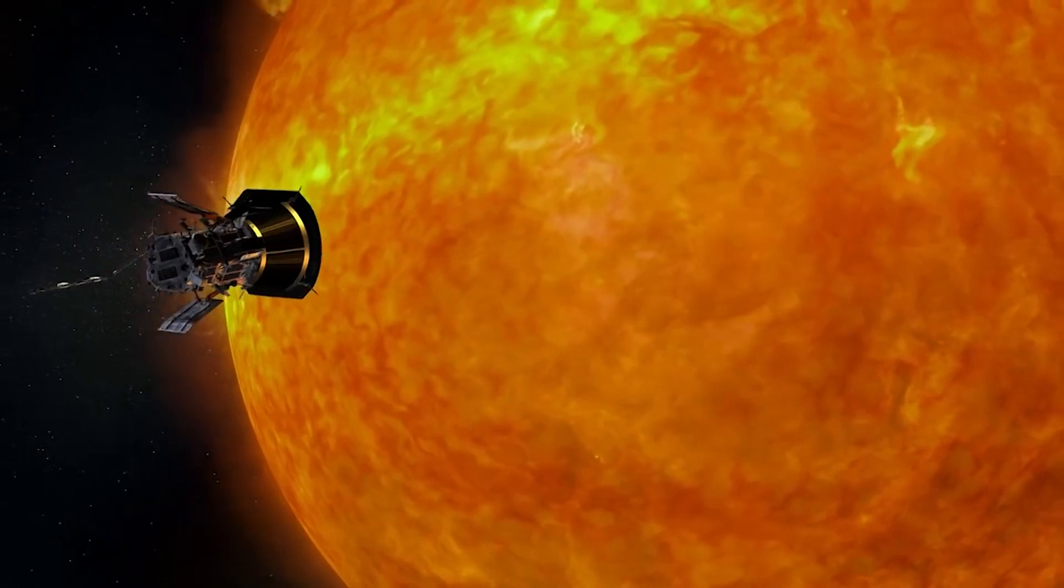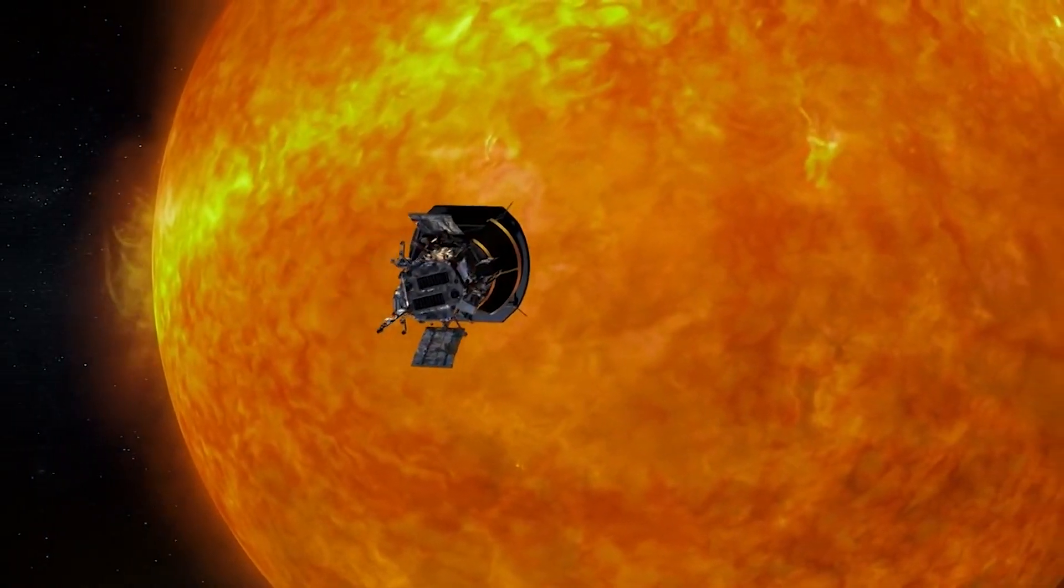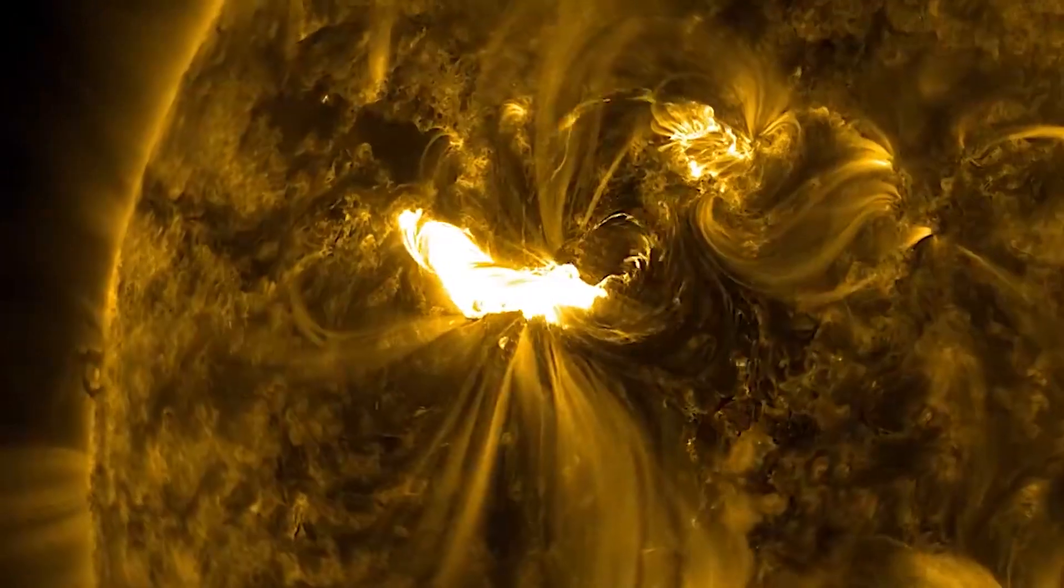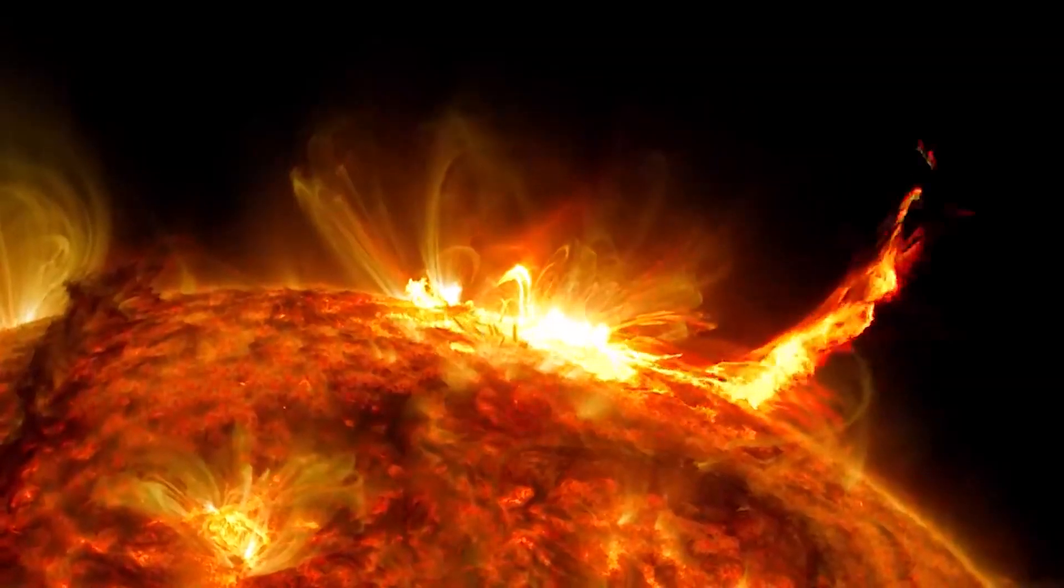The main goal of the Parker Solar Probe is to study the Sun's outer atmosphere in order to answer one of the most puzzling questions about the star: why is the corona so much hotter than the surface?